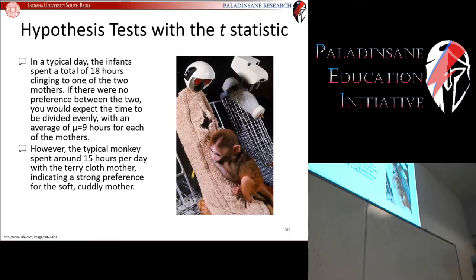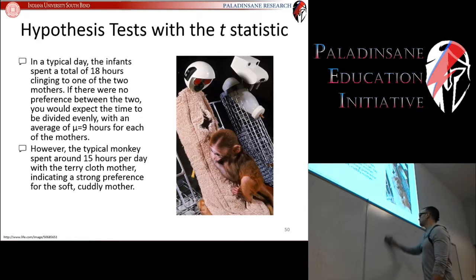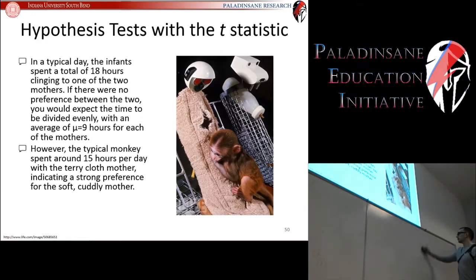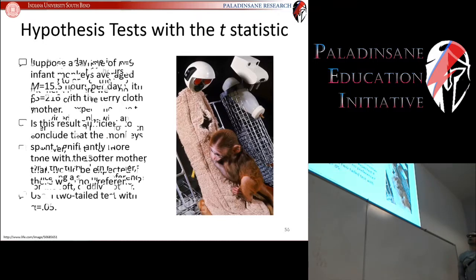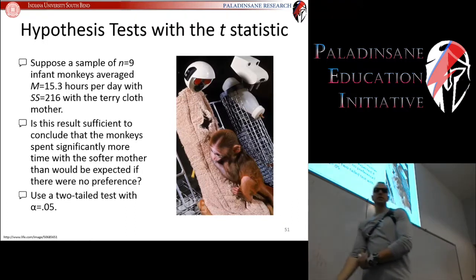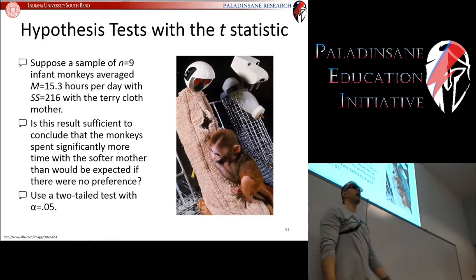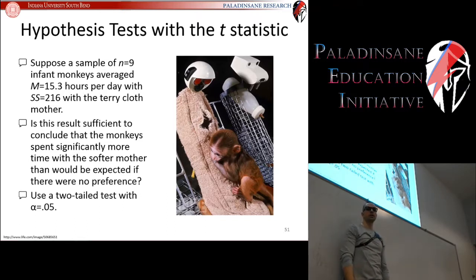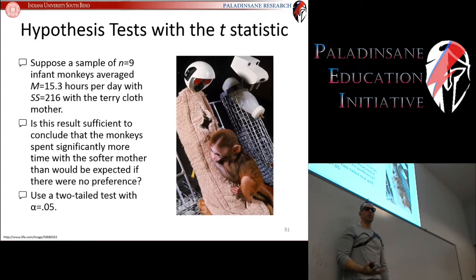However, the typical monkey spent around fifteen hours per day with the terry cloth mother. He found that his sample of nine monkeys spends fifteen hours a day with the terry cloth mother. Let's suppose those nine monkeys actually spent 15.3 hours per day with the terry cloth mother, with a sum of squared deviations of 216. Are these results sufficient to conclude that the monkey spent significantly more time with that mother than would be expected if there was no preference?